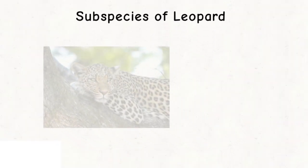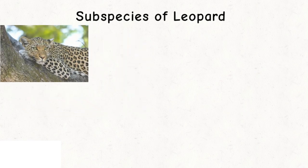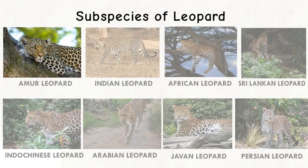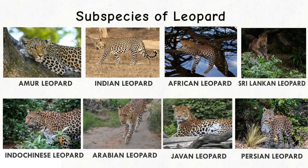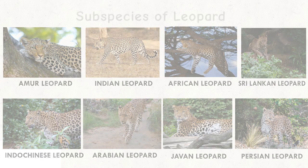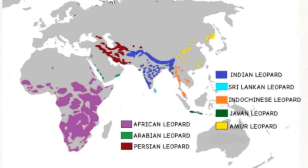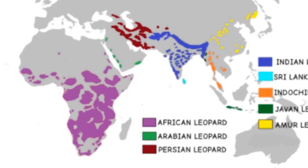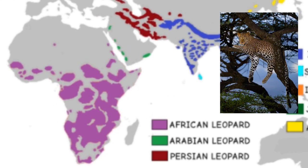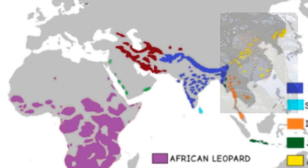Now let's talk about the subspecies of leopards. There are eight subspecies of leopards and fortunately all the subspecies still exist. The African leopard is the most widespread subspecies, native to sub-Saharan Africa.